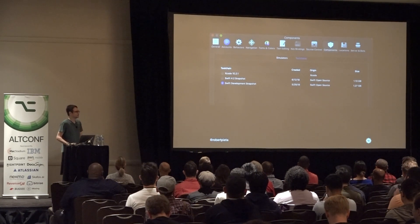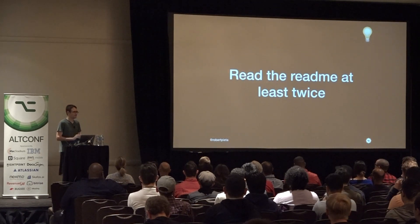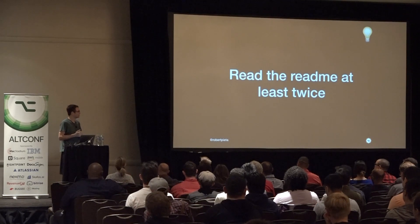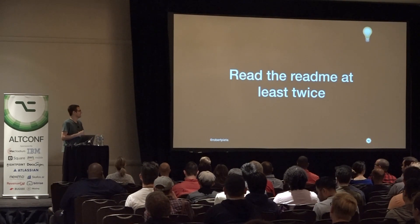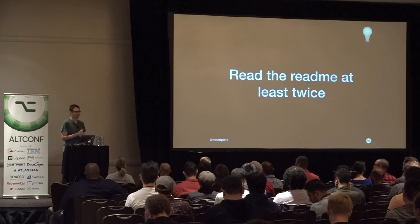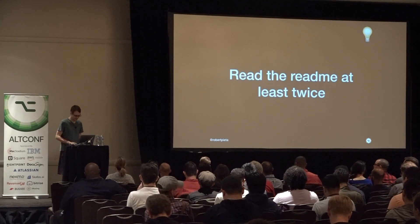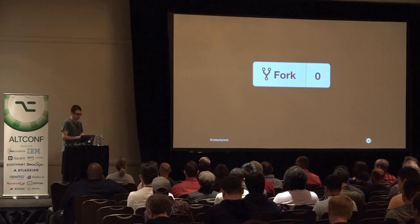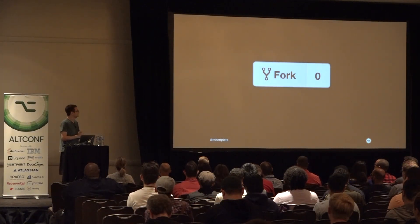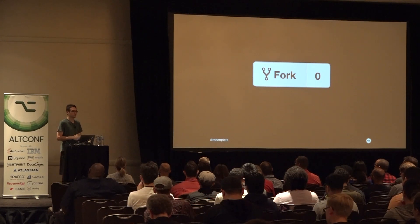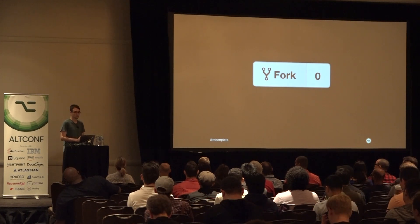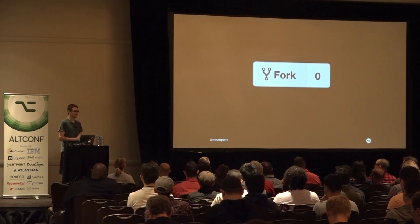Pro tip: read the readme at least twice. That would have saved me a lot of time, especially since CoreLibs Foundation has another dependency on Swift CoreLibs XCTest, which you have to install in the same directory. If you don't, you'll get some really interesting errors of duplicate symbols that aren't really related to the core problem. Once you can build, run, and test the repository, fork the project into your account and then clone it onto your machine. Make a branch — I called it performance since that's what I was looking to do, but we'll rename the branch later. Just make a branch so you actually know what your changes are versus master.